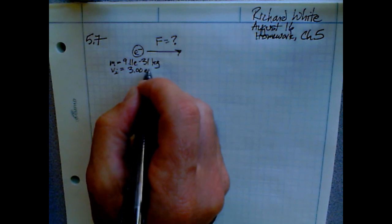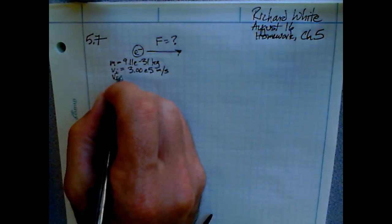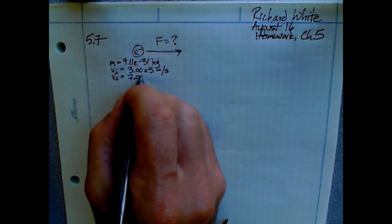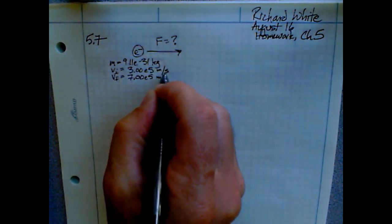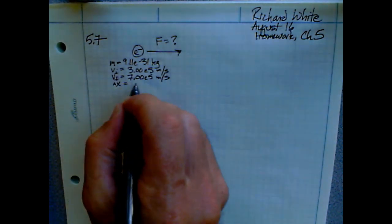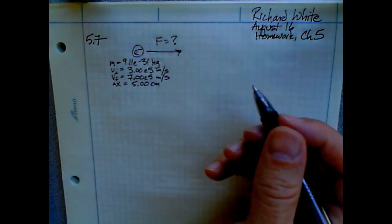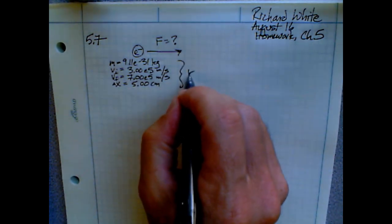Write down the known values in the problem. These are usually given to you in the problem statement, although you may have to look for important information from another source. In this problem, for example, they were nice about giving us the mass of the electron. If that hadn't been given, I'd have to recognize that this was important to helping me solve the problem, and go look up that information somewhere.